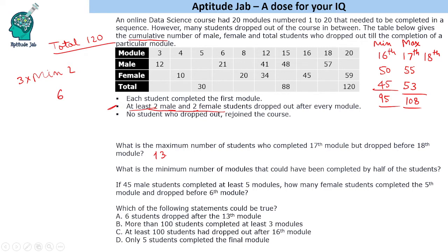The second question asks: what is the minimum number of modules that could have been completed by half the students? With 120 students, we need to find when 60 students remain. We can't put fewer than 41 students as dropouts if we want at most 33 in a gap, giving 53 dropped by module 8. Since only 53 have dropped by module 8, at least 9 modules must be completed for half the students to have dropped out — so the answer is 9.